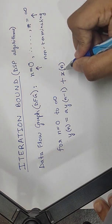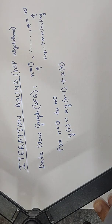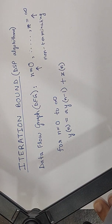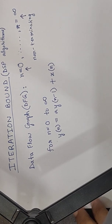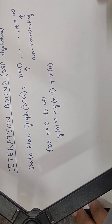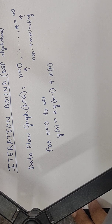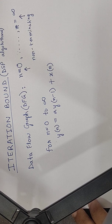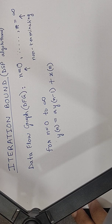The terms involved here: x is the input and y is the output. Now we are more interested in the data flow graph and how to construct it because we need that to formally define iteration bounds and how to calculate them in different circumstances.